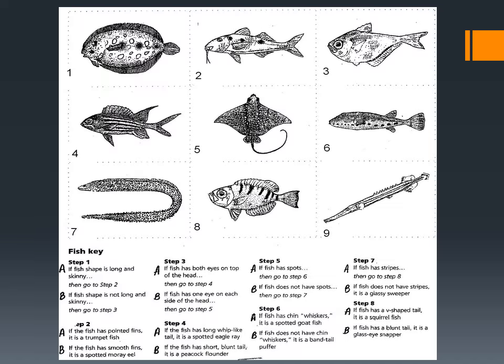Here's an example of a dichotomous key. There are nine different fish that we can key out using this key. There are eight steps — there's always going to be one fewer step than there are organisms keyed out in it.